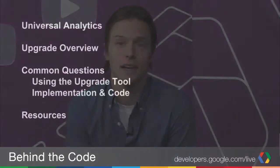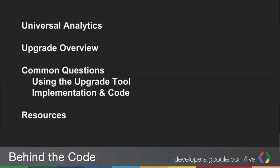Let's take a look at the agenda. Nick's going to give us an overview of what Universal Analytics is. Second, we'll go through an overview of the upgrade itself — what it is, why we're doing it, and what the steps are. Next, we'll cover some common questions from developers about how to use the upgrade tool and what the process looks like, including questions about implementation and code. And at the end, we'll give you some resources to go to after the video.